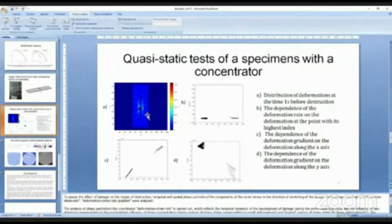And at that point was made analysis and built phase diagrams. Here comes the cluster analysis. And we can divide that there are two different laws. And analysis for phase portraits in the coordinates deformation strain rate reflects the temporal dynamics of the volume development of damage during the entire loading process. And the influence of two attractors responds to the predominant influence of stress concentration and regions of phase states large deformation.